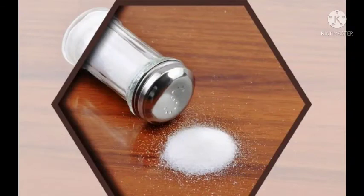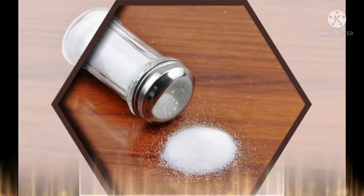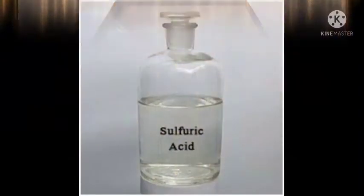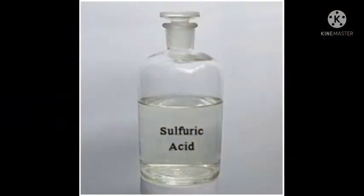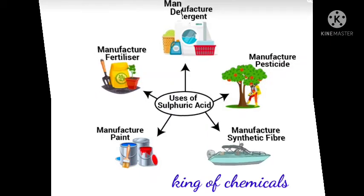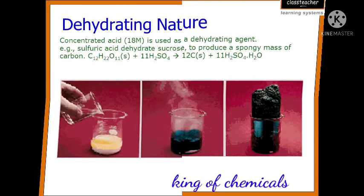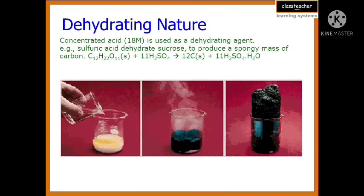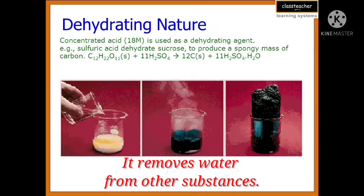Third, hydrochloric acid is used to refine common salt. Next is sulfuric acid. Children, it is a very commonly used acid in industries, so it is also called the king of chemicals. Let us see its main uses.